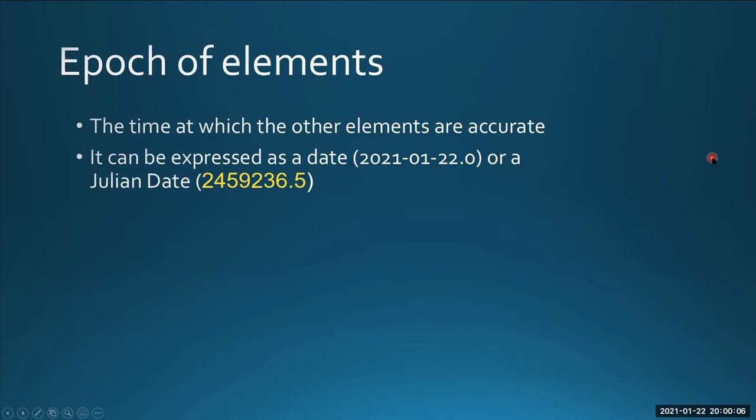There's a number you run into among the elements, which is called the epoch. That is a time when all of these values are accurate. It's the time when all these numbers are correct. Generally, you're going to see the epoch number, which is T0. Hopefully, the software you use will show you a calendar date because it's a lot easier for humans.